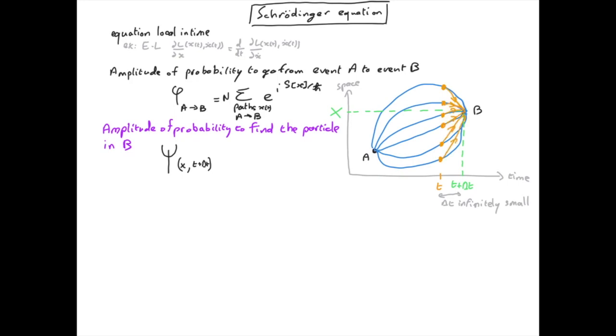If we look at one particular position at time t, we have an amplitude of probability for the particle to be at this position. Then we have an amplitude to go from this event at t to event B, which is exponential i times the action. We have to sum over all possible initial positions, all possible x.